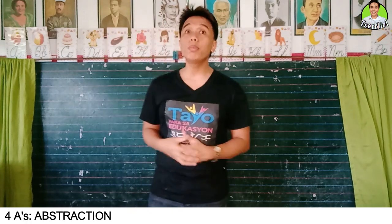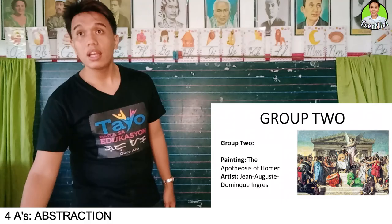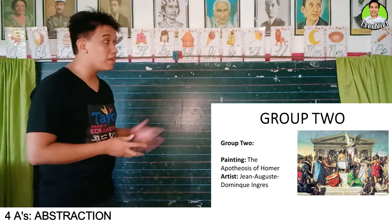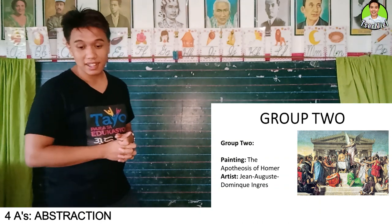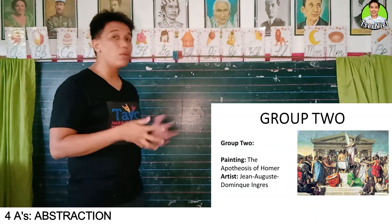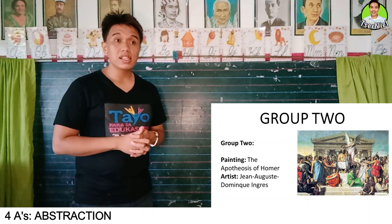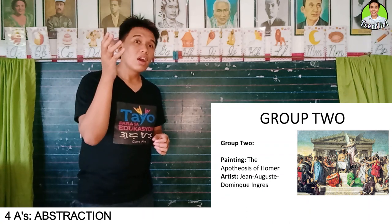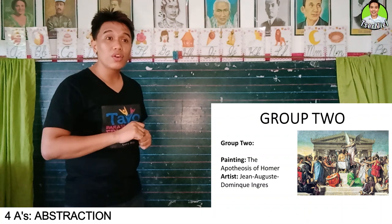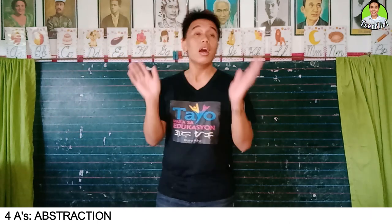Let's proceed with group two. The painting assigned to them was 'The Apotheosis of Homer' by Jean-Auguste-Dominique Ingres. Group two, what did you notice about the line style of the painting? It is very visible. Now what about the texture? It is smooth, since small details are also identifiable. Very good. Let us give group two three claps — one, two, three.